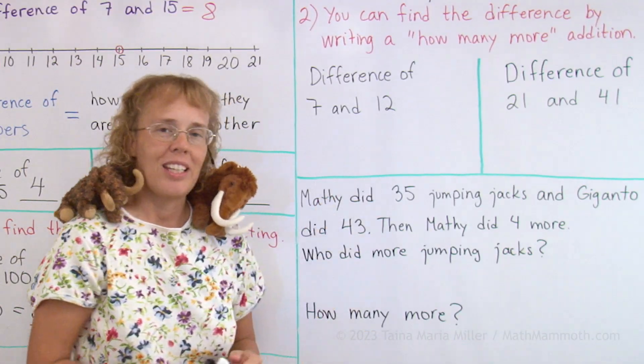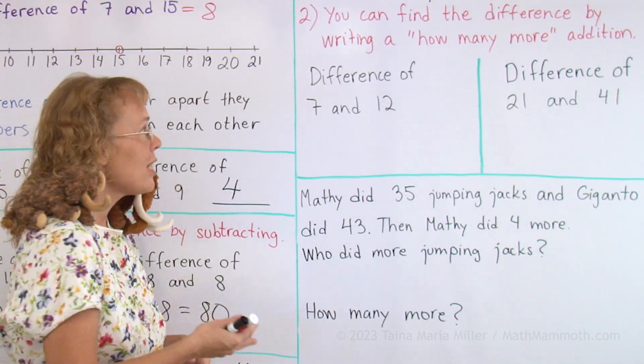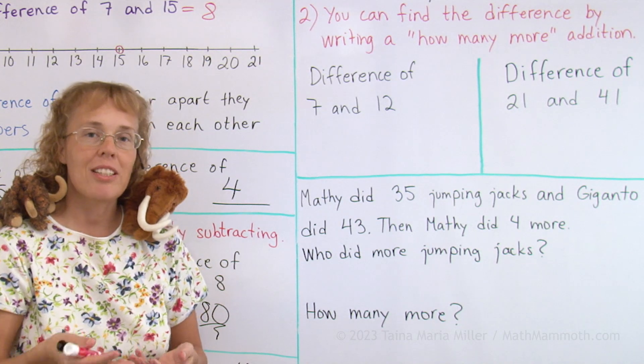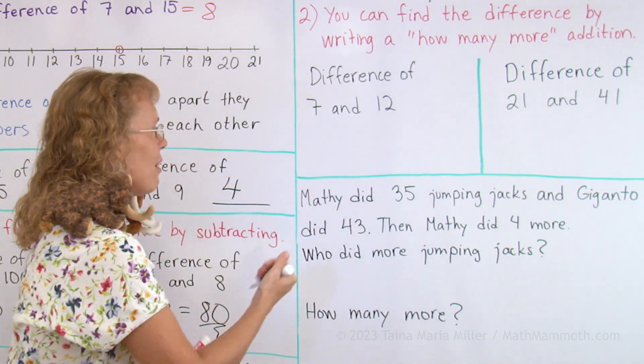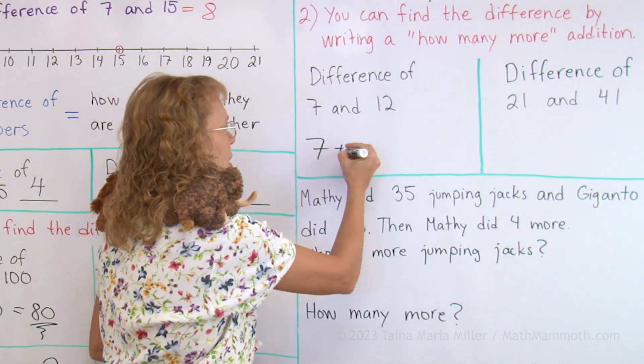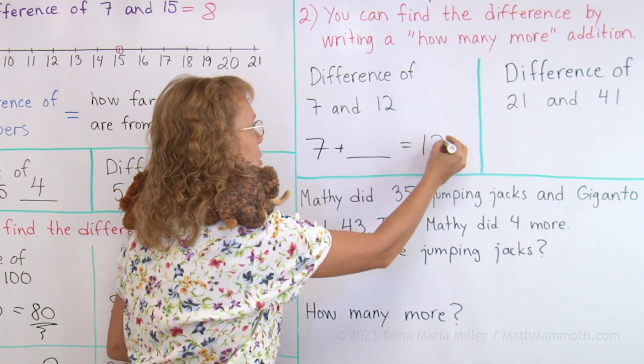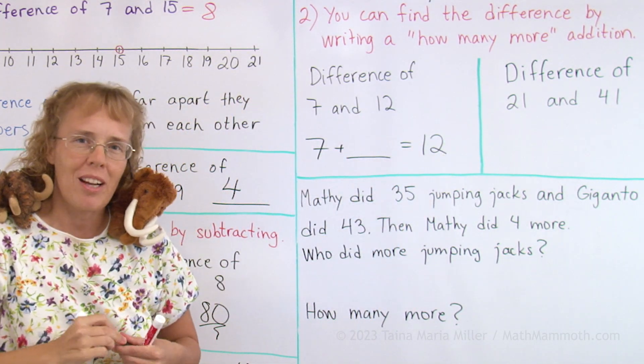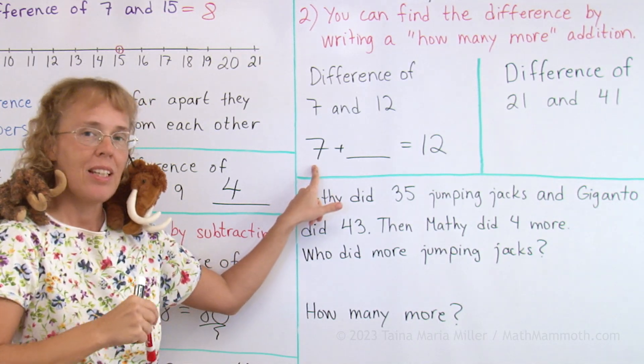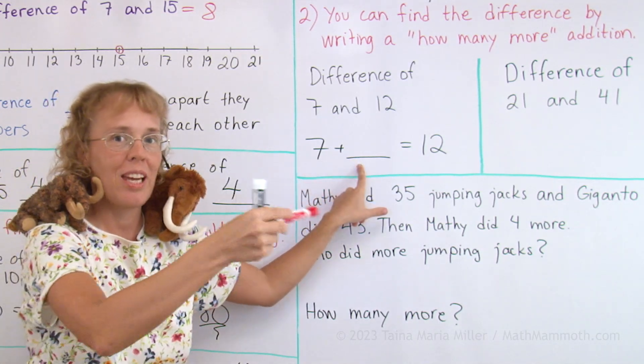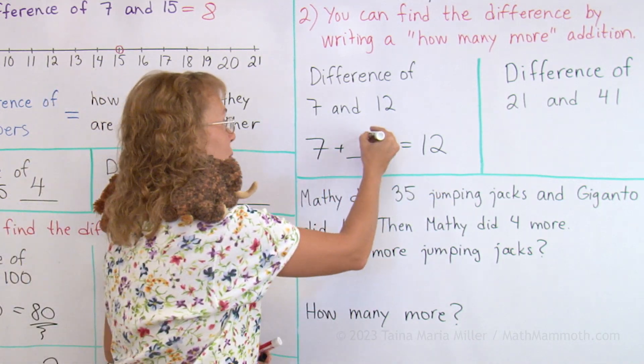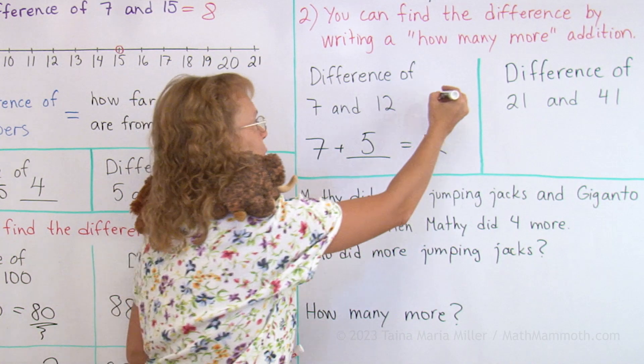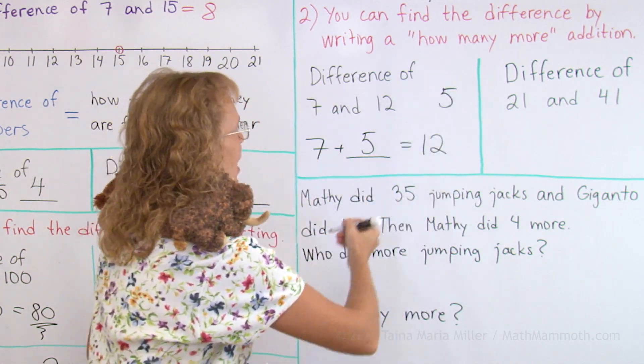And the other way to find a difference of two numbers is to use addition. We write a how many more addition. The difference of 7 and 12, I think this way: 7 plus how many more makes 12. You can think of the number line. If you are at 7, how many more jumps do you need to make to reach to 12? And that would be 5. So the difference is 5. I'll write it here too.